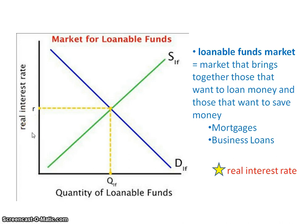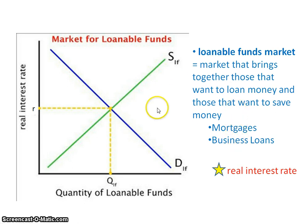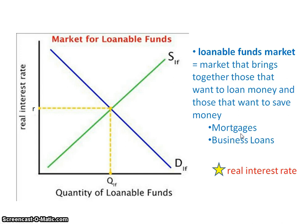The real interest rate is adjusted for inflation. This market is about those who want to loan money to those who want to save. We're really talking about mortgages and business loans here, and this connects to the I in aggregate demand — C + I + G + XN — because businesses take loans for capital stock and individuals take mortgages for their homes.